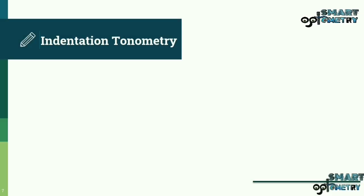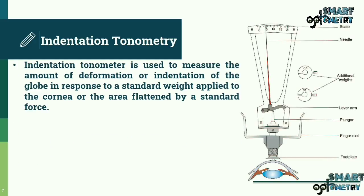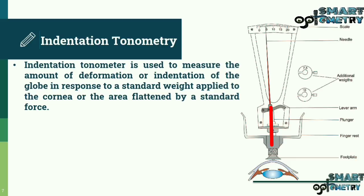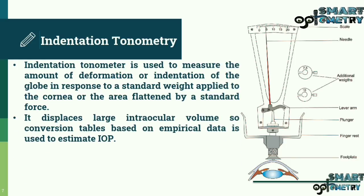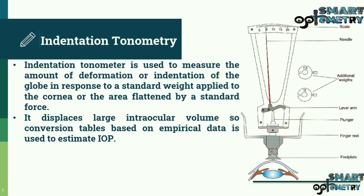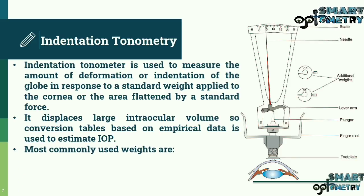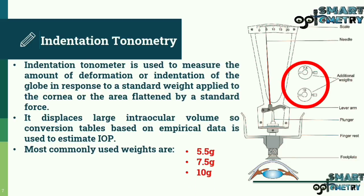Indentation Tonometry measures the amount of deformation or indentation of the globe in response to a standard weight applied to the cornea, or the area flattened by a standard force. It displaces a large intraocular volume, so a conversion table based on empirical data is used to estimate IOP. The most commonly used weights are 5.5 g, 7.5 g, and 10 g.